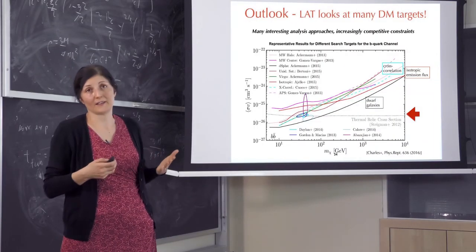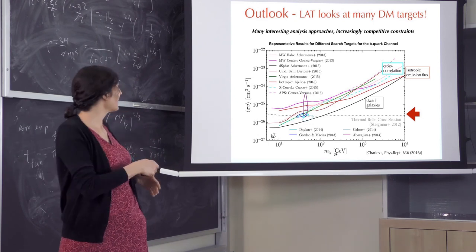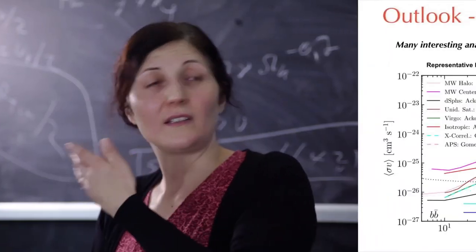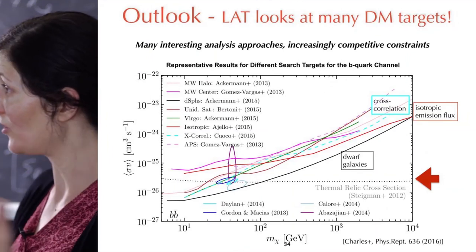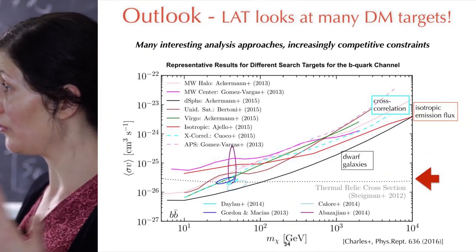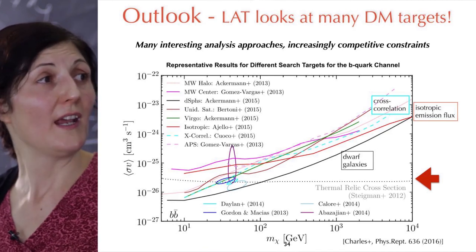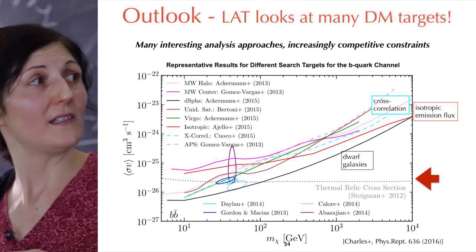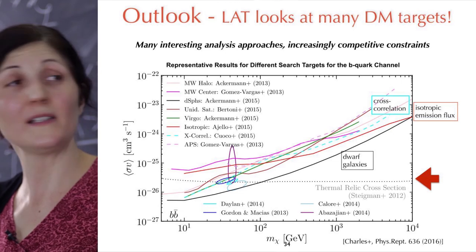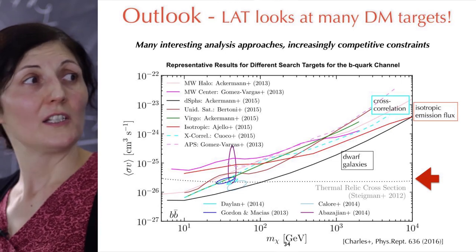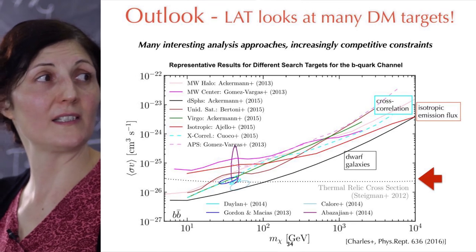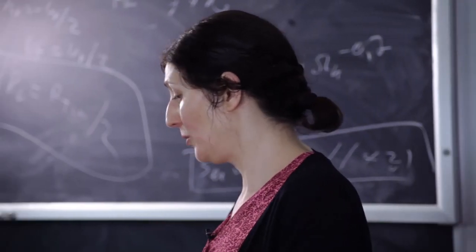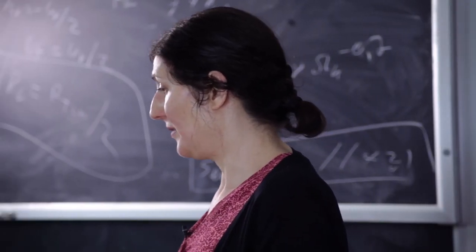I just wanted to stress that LAT looks at many targets. I told you now about galactic center and dwarves but LAT looks in so-called unassociated sources, in this isotropic emission that comes from extragalactic, from outside of our galaxies that I mentioned. These are the limits on cross-section as a function of mass for different targets. So basically for now we have only limits but given that we have so many targets, if a signal is found we will be able to cross-check it in different ways.